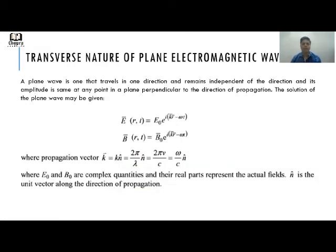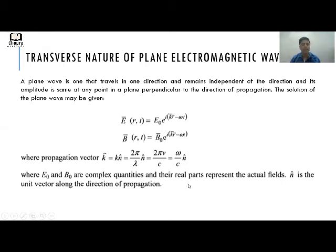Using Maxwell's equations, we will now show whether electromagnetic waves are transverse in nature. A plane wave travels in one direction and its amplitude is the same at any point in a plane perpendicular to the direction of propagation. The plane wave solutions are: E(r,t) = E₀ e^{i(K·r − ωt)} and B(r,t) = B₀ e^{i(K·r − ωt)}, where K is the propagation vector given by (2π/λ)n̂ or (ω/c)n̂, E₀ and B₀ are complex amplitudes, and n̂ is the unit vector along the direction of propagation.